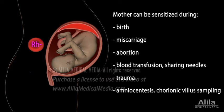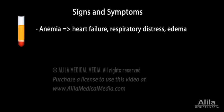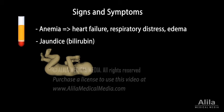Anemia can cause heart failure, respiratory distress, and edema. Infants born with HDN also develop jaundice due to the accumulation of bilirubin, a yellow product of hemoglobin breakdown. Because red blood cells are destroyed rapidly and infants are unable to excrete bilirubin effectively, its levels rise quickly within 24 hours of birth. Bilirubin is toxic for brain tissues and may cause irreversible brain damage in a condition known as kernicterus.